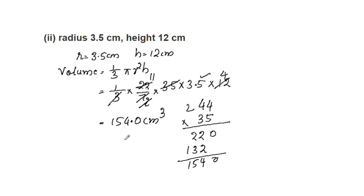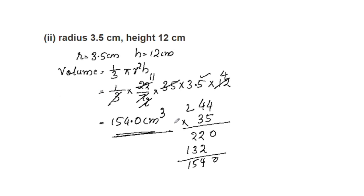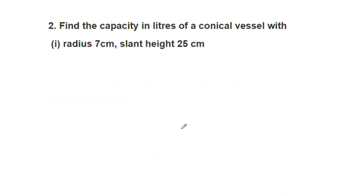Note that this is centimeters cubed — a unit of volume, not centimeters squared which is area. So the answer is 154 cm³. Now the second question: find the capacity in liters of a conical vessel with radius 7 cm and slant height 25 cm.